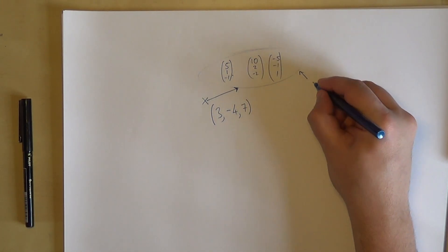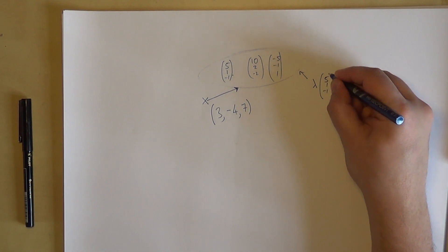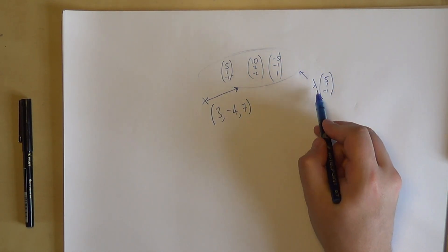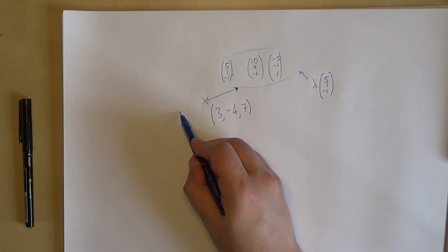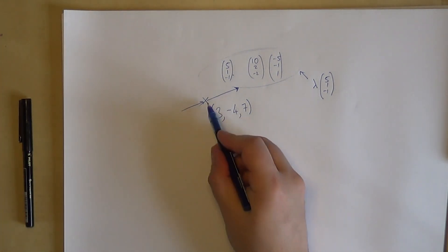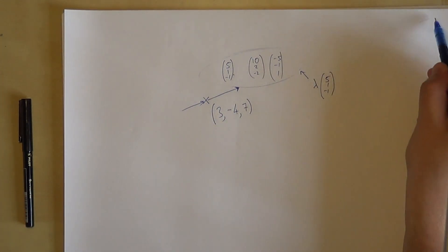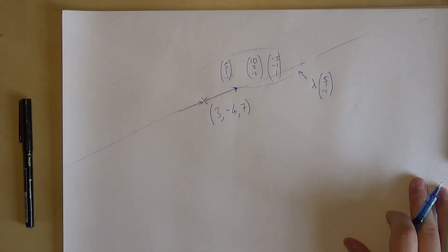So these are all some multiple, some parameter—usually we use lambda, but we can use other letters too—of 5, 1, negative 1. So this term here, multiplying a vector by a scalar, by a number, allows you to go as far as you like in that direction. And of course if this is negative, you could also go backwards. So from this point I can go as far as I like that way and as far as I like this way, and if I do that I will have the infinite line that goes through them.